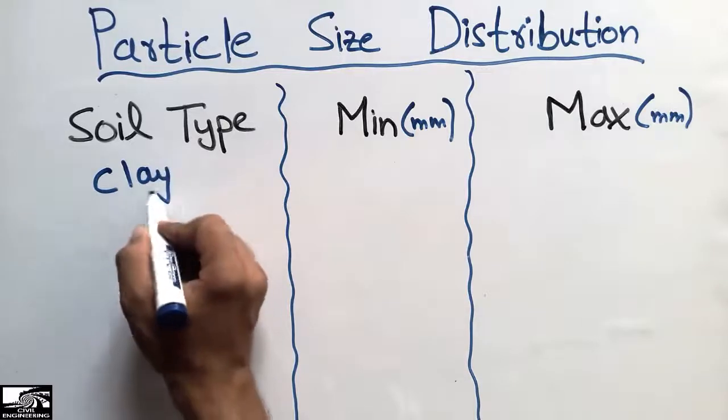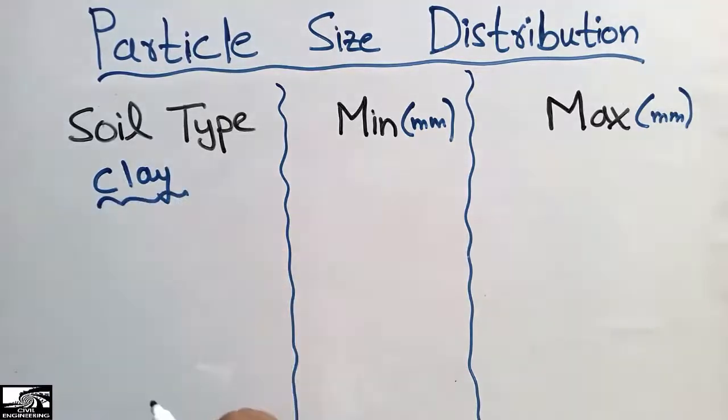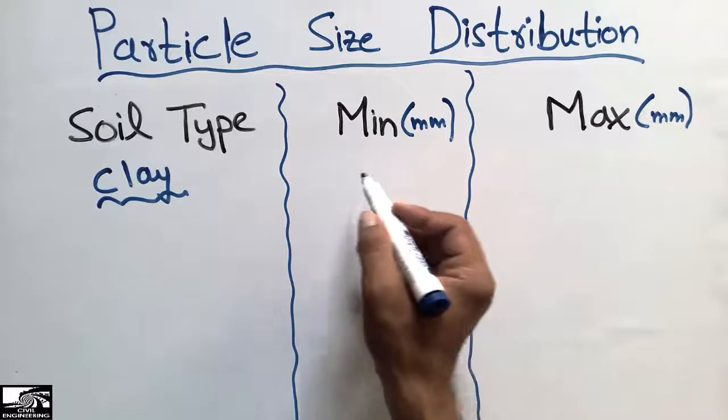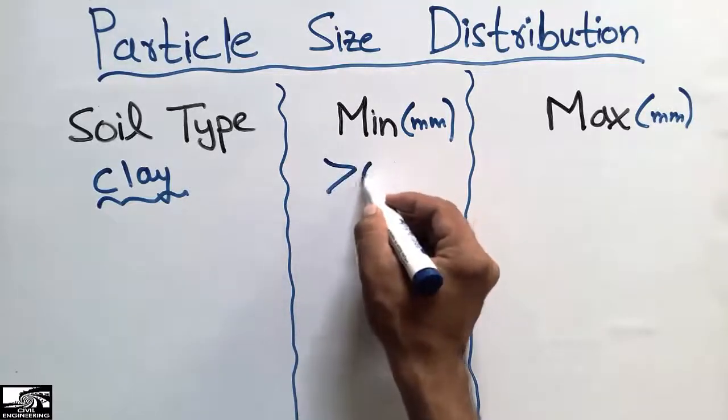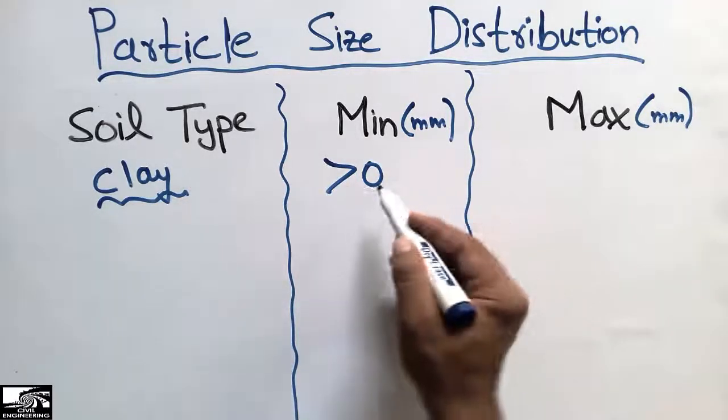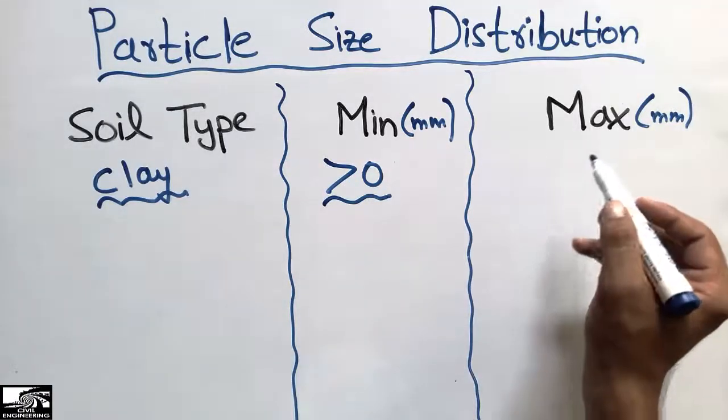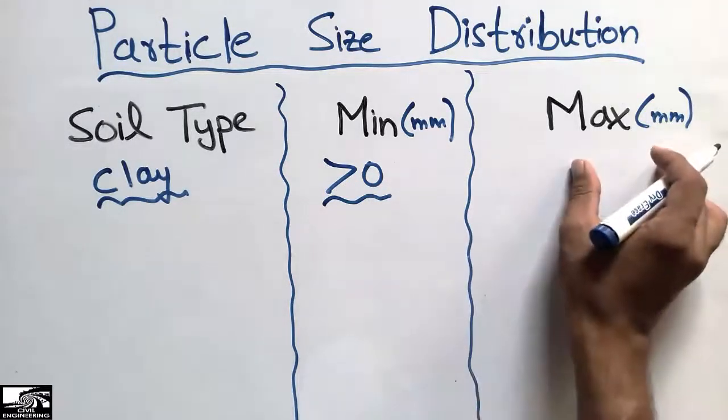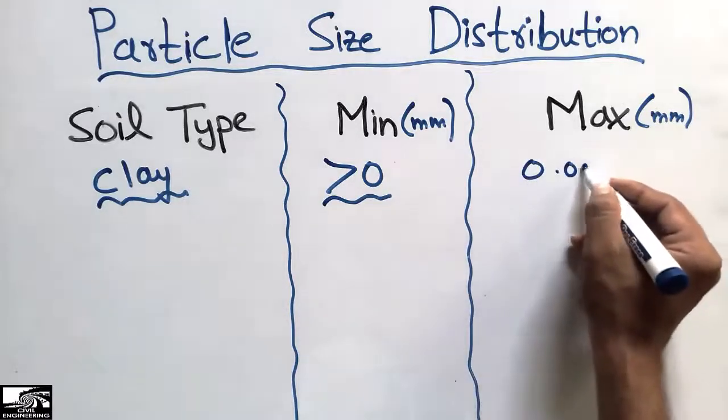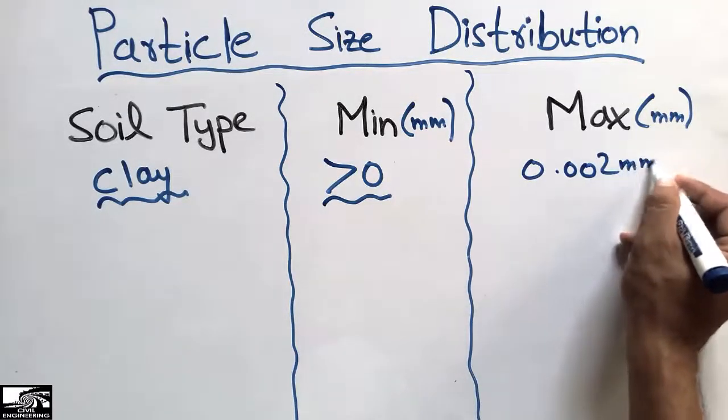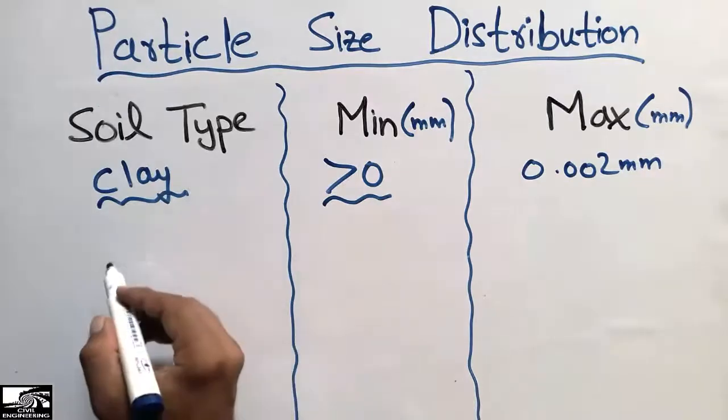The first type of soil is clay. Clay has the lowest particle size. The minimum size of clay is usually greater than zero, but its minimum range is not known, while the maximum particle size of clay is 0.002 millimeter.